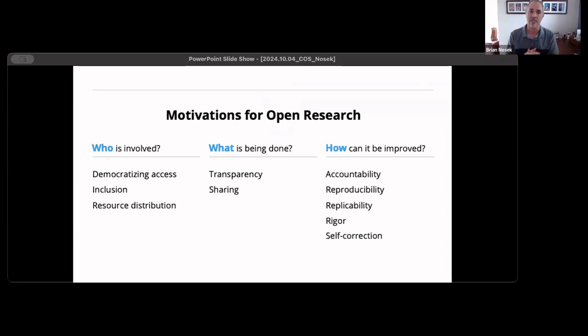One class of interests is open research advances who gets to be involved in the research process, democratizing access to the knowledge base itself, providing inclusive pathways for who can get involved in the research process and discussion with their own skills and interests and attributes.